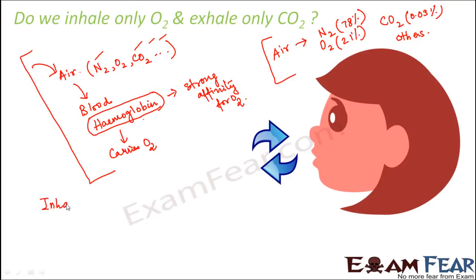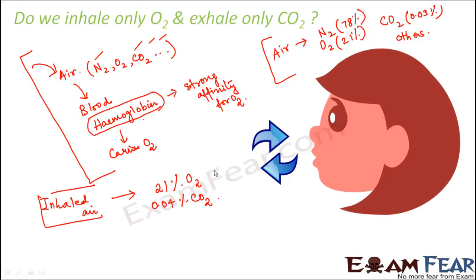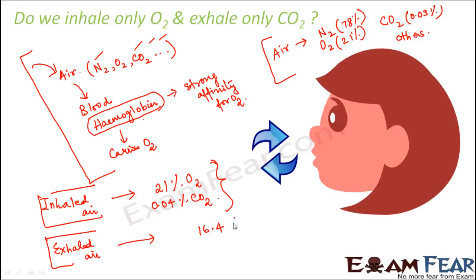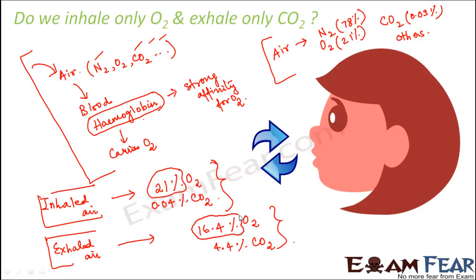If you look at the composition of inhaled air, it contains almost 21% oxygen and 0.04% carbon dioxide. I am focusing on oxygen and carbon dioxide because those are the two gases involved in the process of respiration. In the exhaled air, there is 16.4% oxygen and around 4.4% carbon dioxide. Comparing these percentages: we inhaled 21% oxygen and gave out only 16.4%, so the remaining 4.4% is actually utilized by the body.